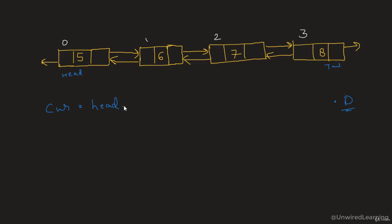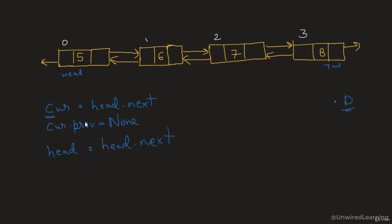So my head dot next refers to 6. This cursor which is 6 dot prev — I am going to call it as none, so we have disconnected this connection and updated the prev. The second thing is I also need to update my head, so head will be head dot next which is my cursor. Now this is not our head — our head will be the next node. After doing all this we need to decrease the size by minus 1.